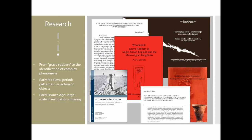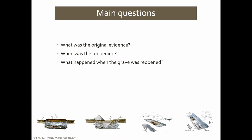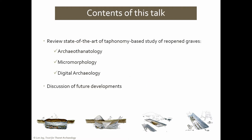In the early Bronze Age, such large-scale investigations are still missing. To find out why a grave was reopened, the main questions are: what was the original evidence, when did the reopening take place, and what happened when the grave was reopened — were human remains or objects removed or deposited, and how were the human remains treated? To understand all this, it's particularly important to understand the taphonomy and to distinguish between human and natural factors. In this talk we will discuss archaeothanatology, micromorphology, and digital archaeology methods applied to research these graves, and we will end with some recommendations for future excavations.